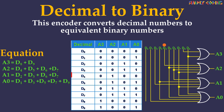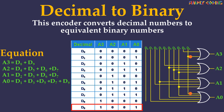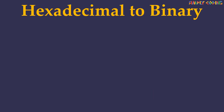For example, in this circuit if we give input as D4 then the output will be 0 1 0 0, and similarly when input is D9 the output is 1 0 0 1.